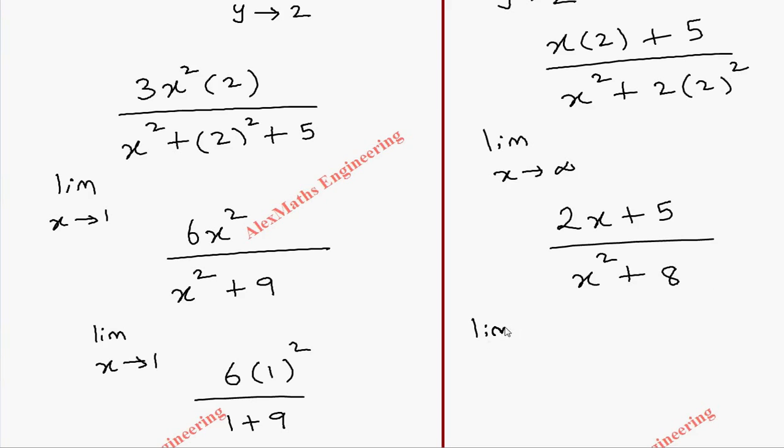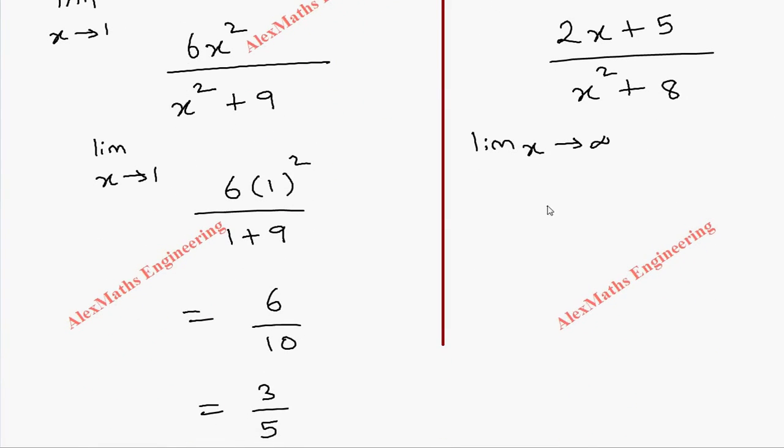Now we have to substitute the value of limit x tending to infinity. The highest power which we can take common in the numerator is x. So the first term is 2 and second term is 5 by x.